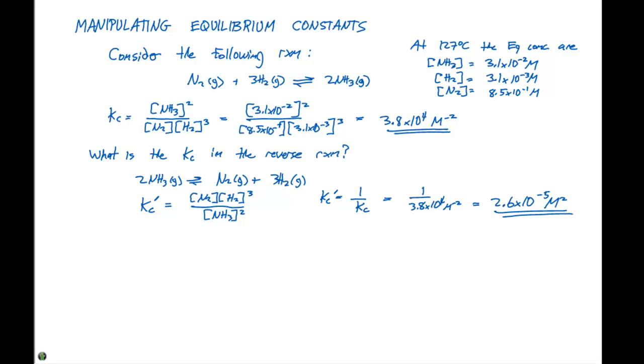Now notice when we're comparing these, they're both telling us the same thing. This first Kc right here, 3.8 times 10 to the fourth, is going to tell us that this favors the products. And the products in this case is NH3.